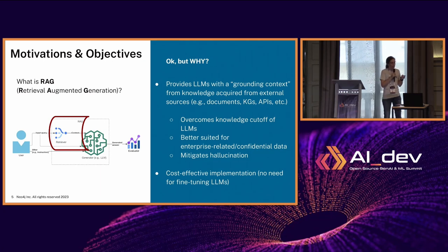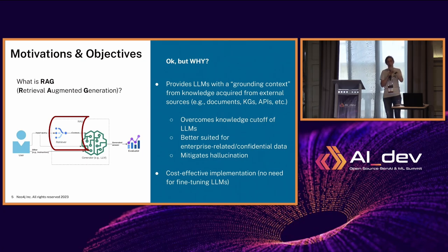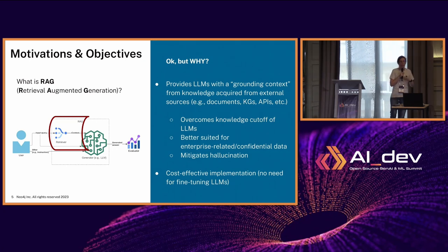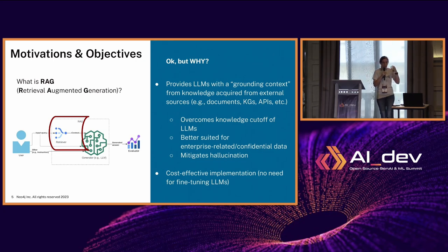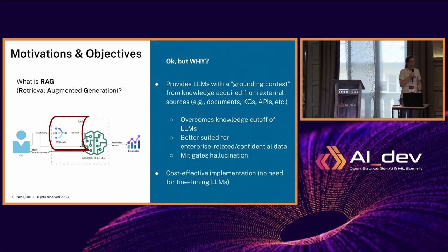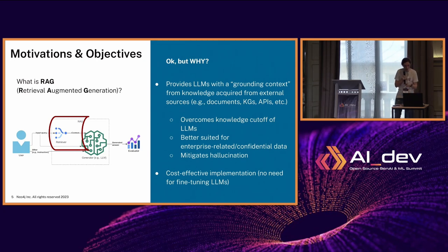You have some retriever whose goal is to provide the LLM with a grounding context that you pass inside the prompt. The goal is to overcome some of the LLM limitations — for instance, the fact that they were only trained up to a certain time, so if you are asking for information about the newest events it won't be able to answer out of the box. You also have this issue with enterprise or private data that the LLM hasn't seen, and it's also helpful to mitigate hallucination issues from LLMs.